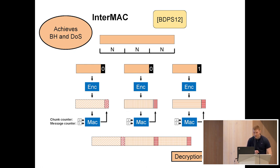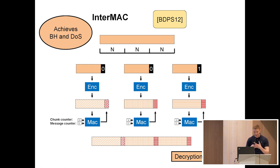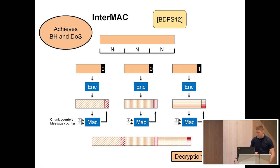You then encrypt each encoded chunk and compute a MAC over it. To prevent reordering attacks, you have to include two counters into the MAC computation. To arrive at the final ciphertext, you just concatenate everything together. To decrypt, you shift into reverse: you verify the MAC, decrypt, and inspect the encoding byte. If the encoding byte is 1, you have recovered your plaintext.